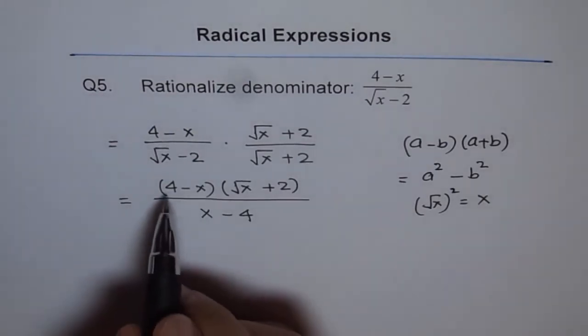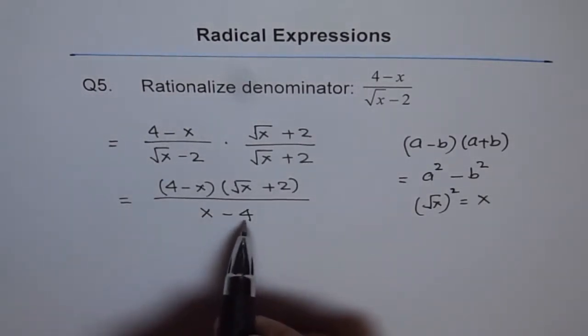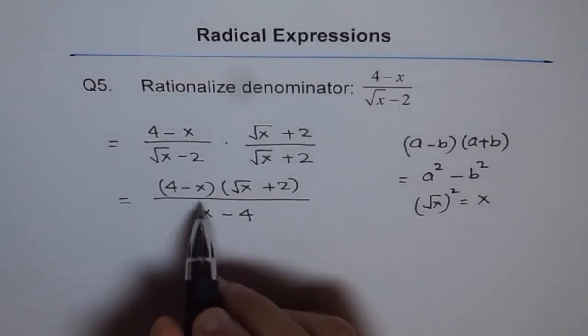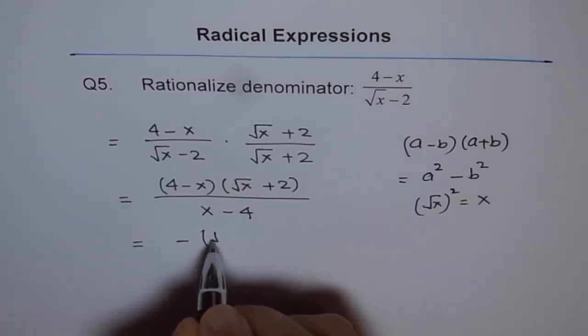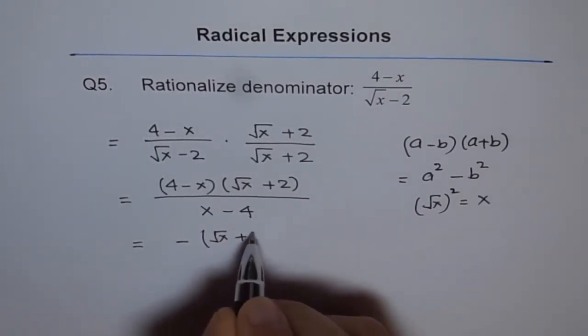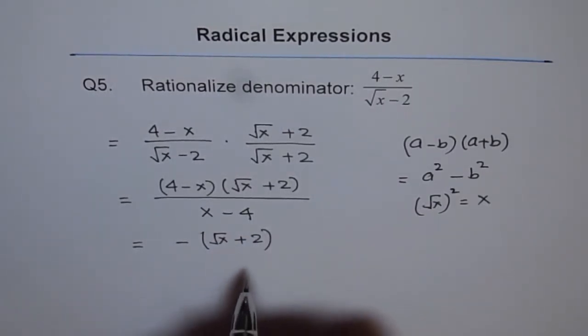Now, you can see 4 minus x and x minus 4 have a common factor, and they can be multiplied by minus 1. So we can write this as minus of square root of x plus 2. So that becomes our answer.